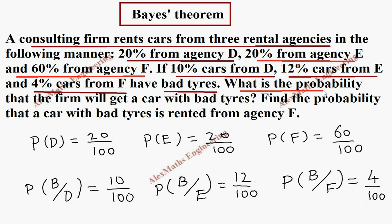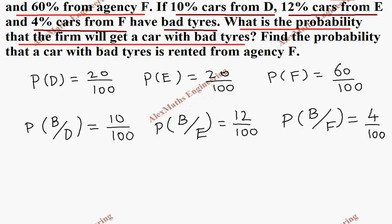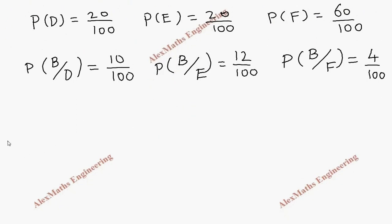Now, what is the probability that the firm will get a car with bad tires? So they are asking for the bad tires. We are going to write the formula. Getting the bad tires is possible from D, E, and F. So from D and getting the bad tire, then choosing E and getting the bad tire.